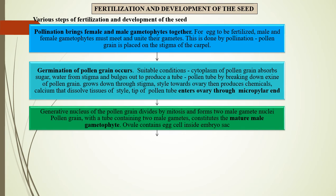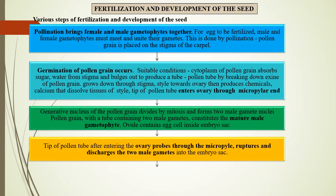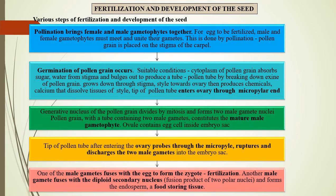The pollen grain with a tube containing two male gametes constitutes the mature male gametophyte. The ovule contains the egg cell inside the embryo sac. The tip of the pollen tube, after entering the ovary, probes through the micropyle, ruptures, and discharges the two male gametes into the embryo sac. One male gamete fuses with the egg to form the zygote — this fusion is called fertilization. Another male gamete fuses with the diploid secondary nucleus (the fusion product of the two polar nuclei) and forms the endosperm, a food-storing tissue.